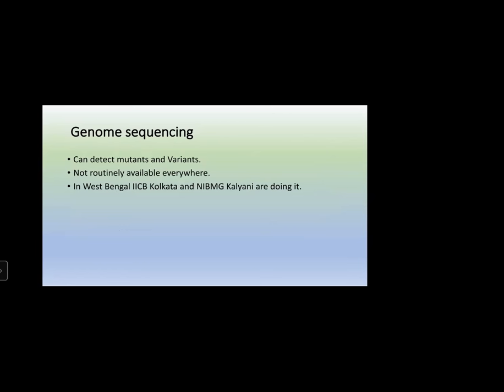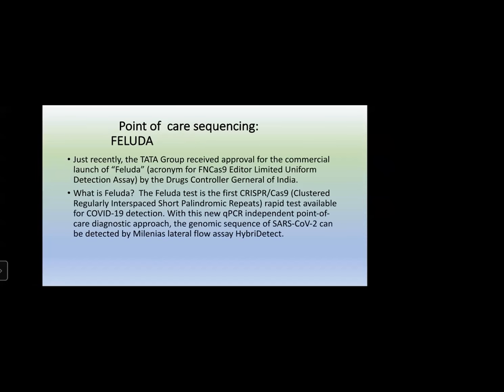In West Bengal, only IICB Kolkata — the Indian Institute of Chemical Biology — and the National Institute of Biomedical Genomics, Kalyani, which is also near Kolkata, are doing genome sequencing. Routinely, people have to send samples for confirming the sequence, which helps in diagnosing Delta, Delta Plus, Mu, or Omicron.